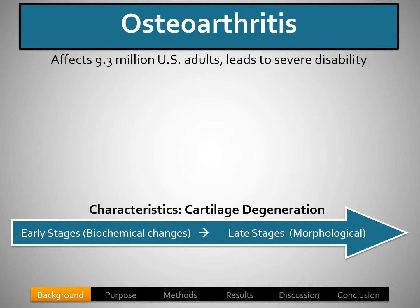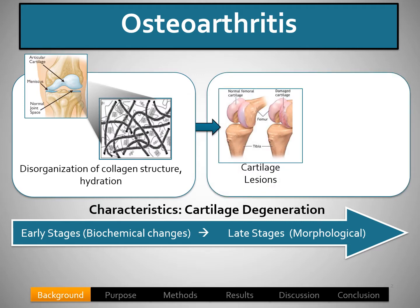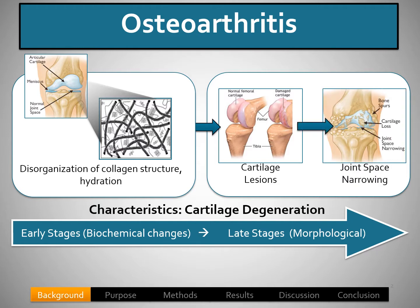Osteoarthritis affects 9.3 million U.S. adults and leads to severe disability. There are various characteristics of osteoarthritis, including cartilage degeneration, that starts from the early biochemical stages and follows by late-stage morphologic changes. The early biochemical stages involve features such as disorganization of the collagen network and changes in hydration, followed by later stages that include cartilage lesions, and the advanced stages that include joint space narrowing.